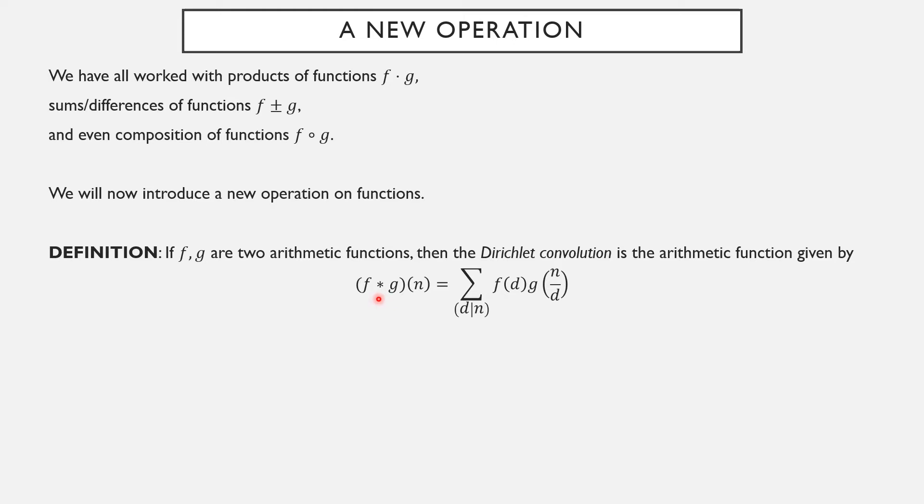We're going to use this symbol to represent Dirichlet convolution. f star g of n is a sum over all the positive divisors of n. So for every positive integer that is a factor of n, you compute f of the divisor and then g of n divided by that divisor.